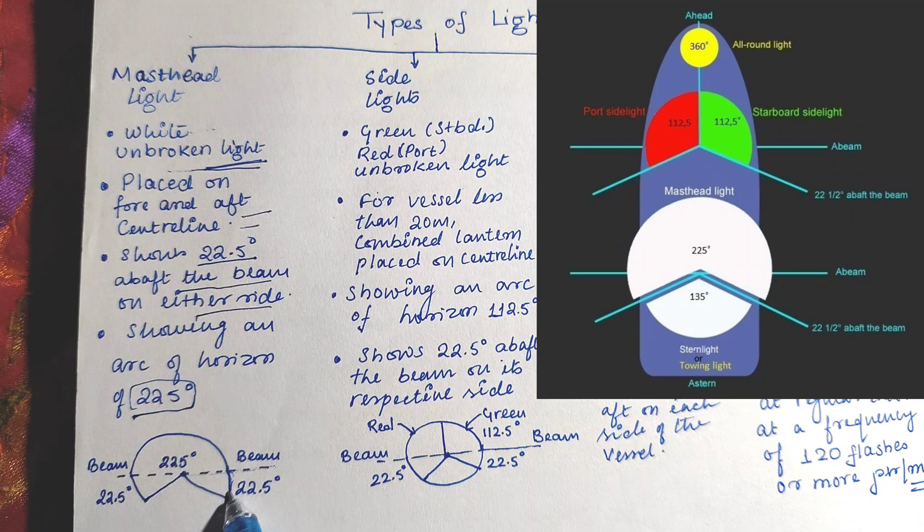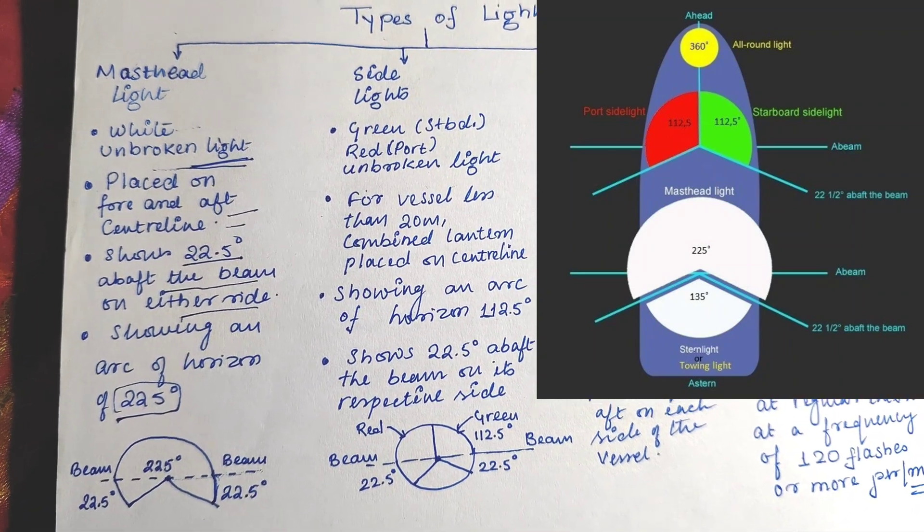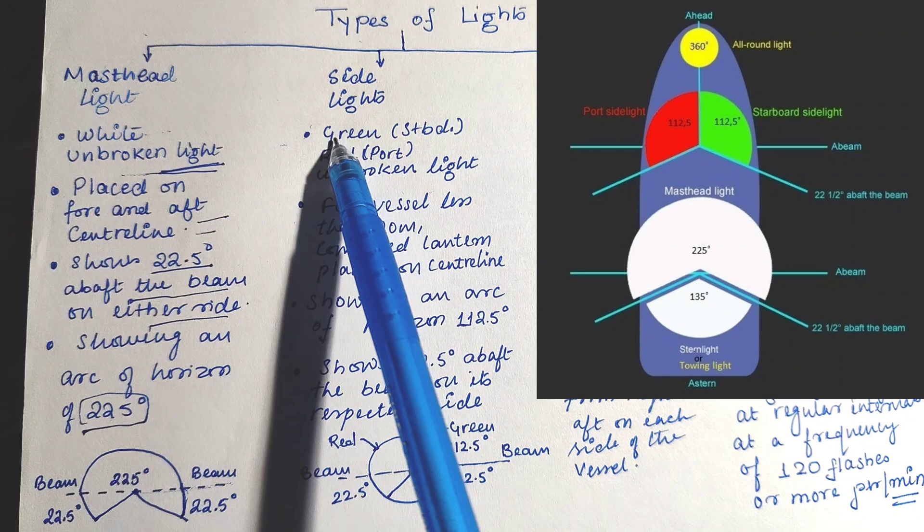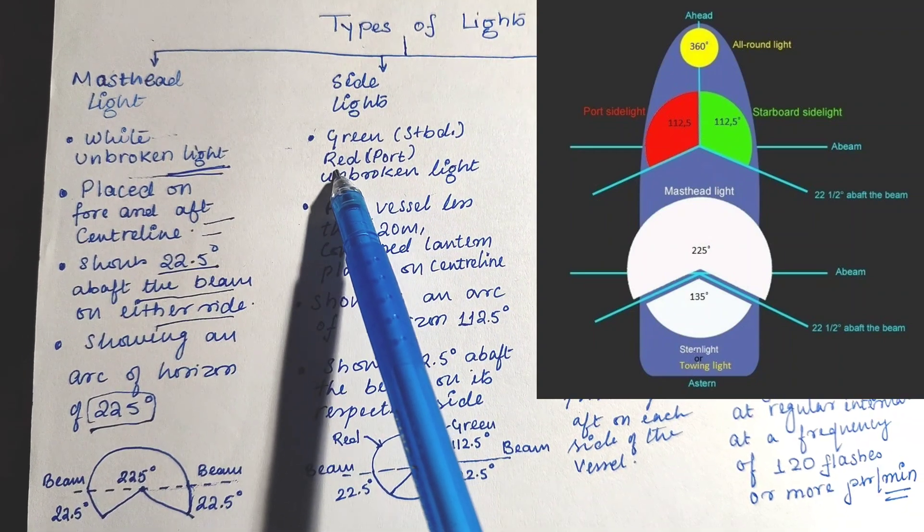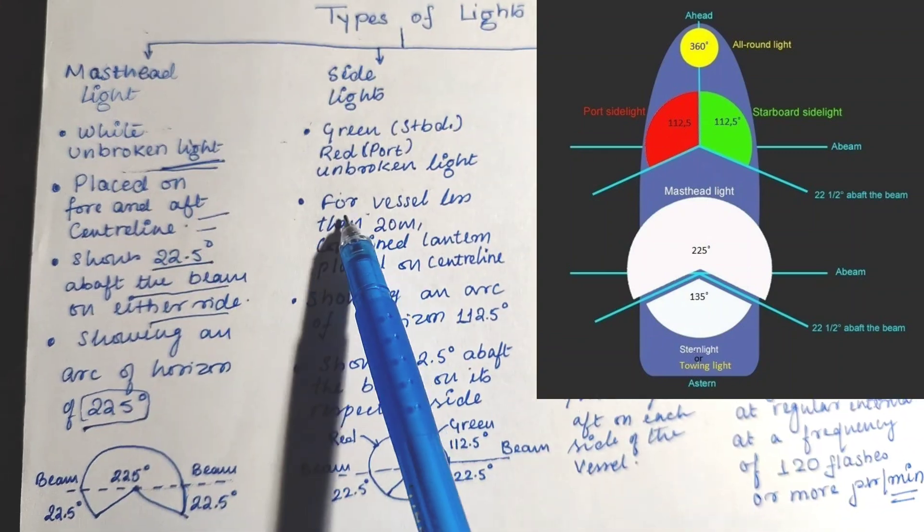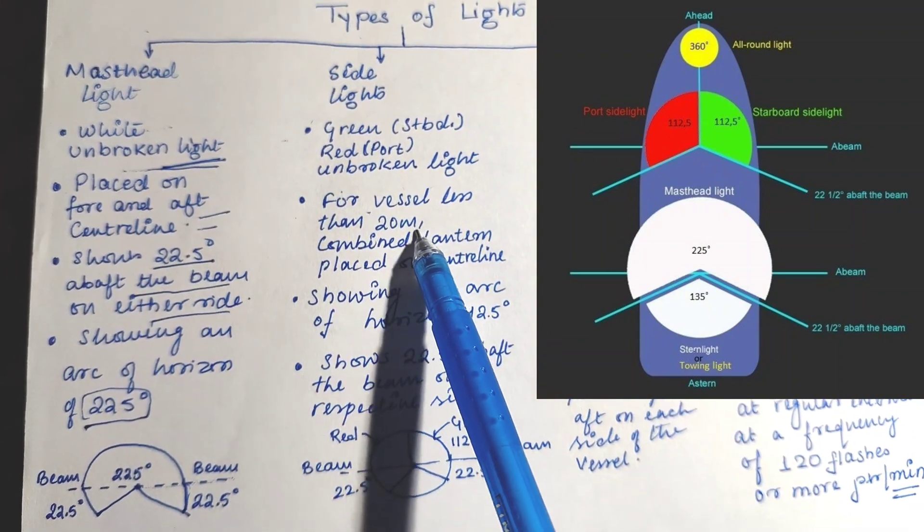Side lights: starboard side is green and port side is red. This is also an unbroken light. For vessels less than 20 meters in length, the combined lantern is placed on the center line, showing an arc of horizon of 112.5 degrees.